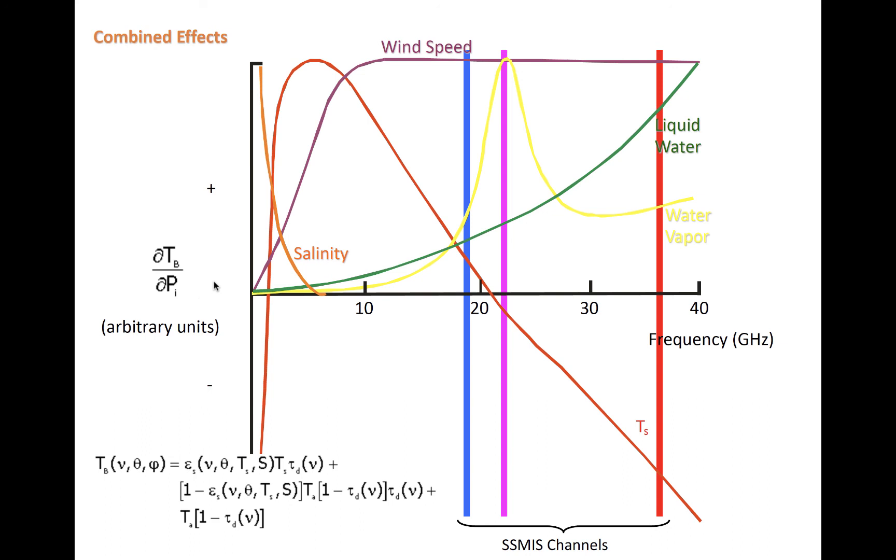For example, the yellow line represents the effect of water vapor on brightness temperature at various frequencies. It is always above zero on the y-axis, meaning that increases in water vapor concentration cause increases in microwave brightness temperatures at all the frequencies shown. There is a peak in sensitivity of brightness temperature to water vapor at 22 GHz, which is located in a water vapor absorption band.